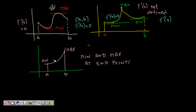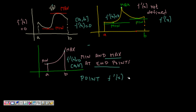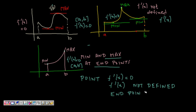This function has nowhere where f'(x) is equal to zero in a to b, but it is a monotonically increasing function and its minimum is at a and maximum is at b. So we must also evaluate the function at the endpoints. So the three points you should investigate are: where f'(x) is equal to zero, where f'(x) is not defined, and at the endpoints.